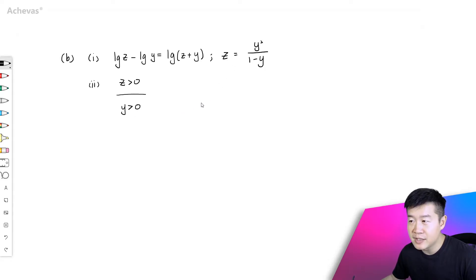And at the same time z which is equal to y square over 1 minus y, we know that z is supposed to be bigger than 0. So now this tells us that y square over 1 minus y must be bigger than 0.